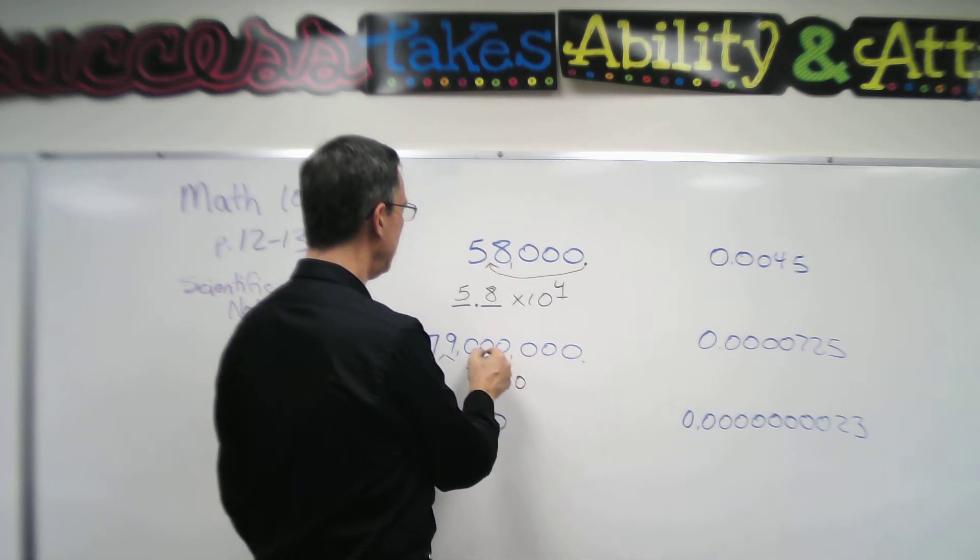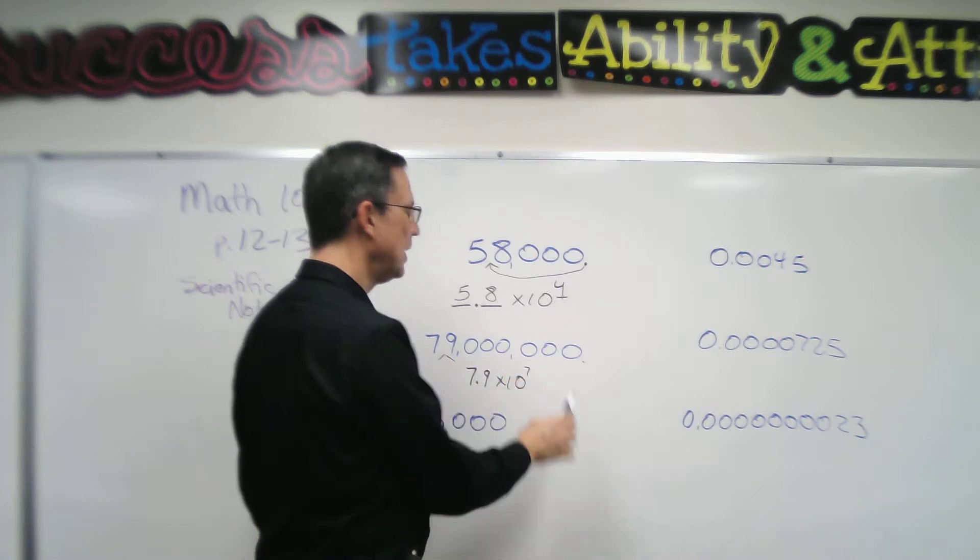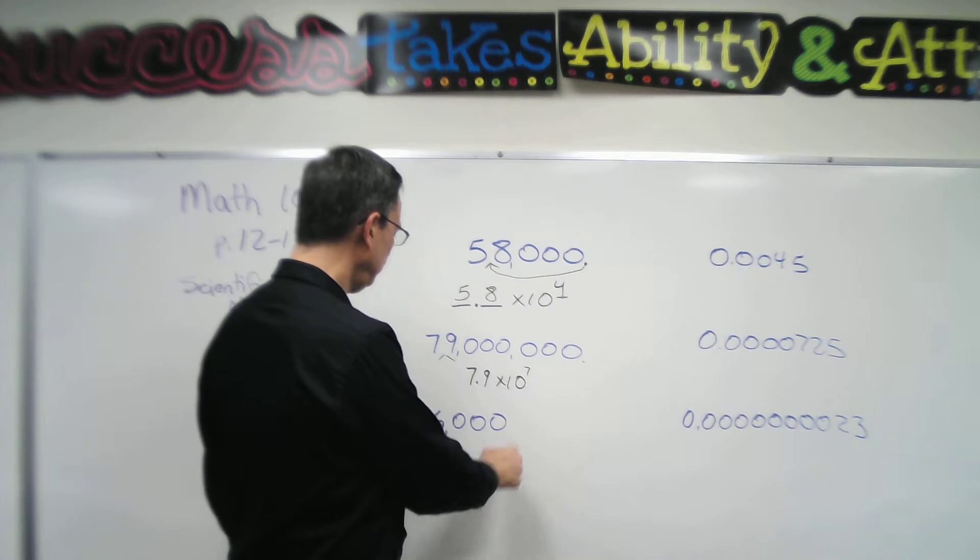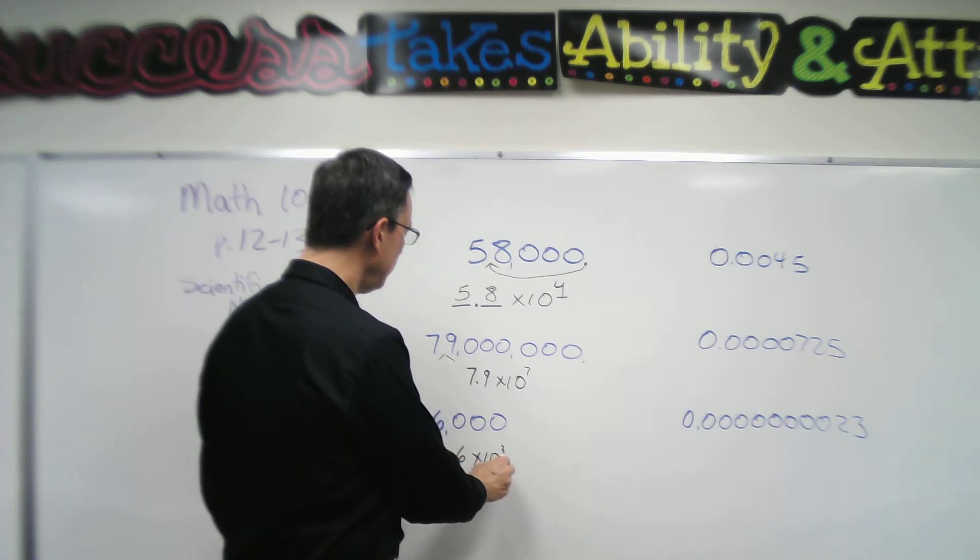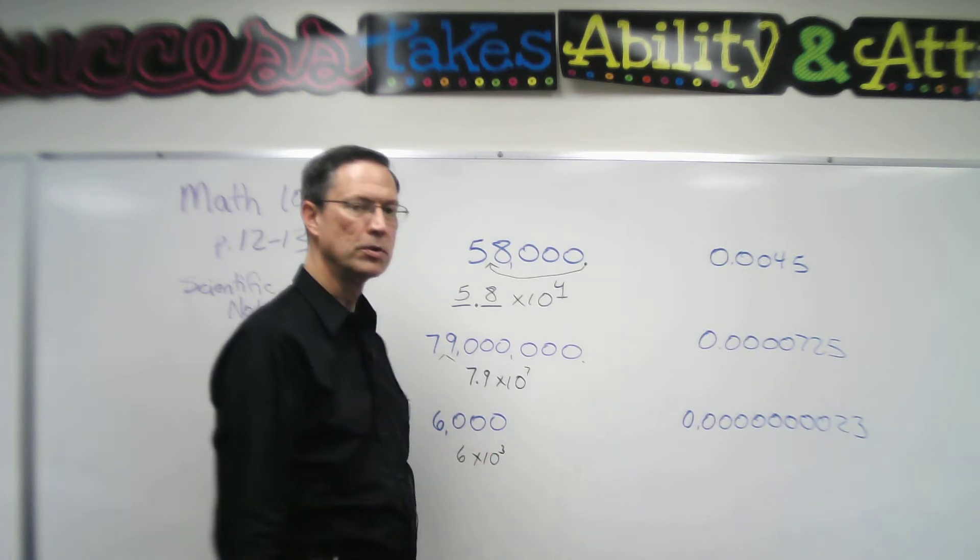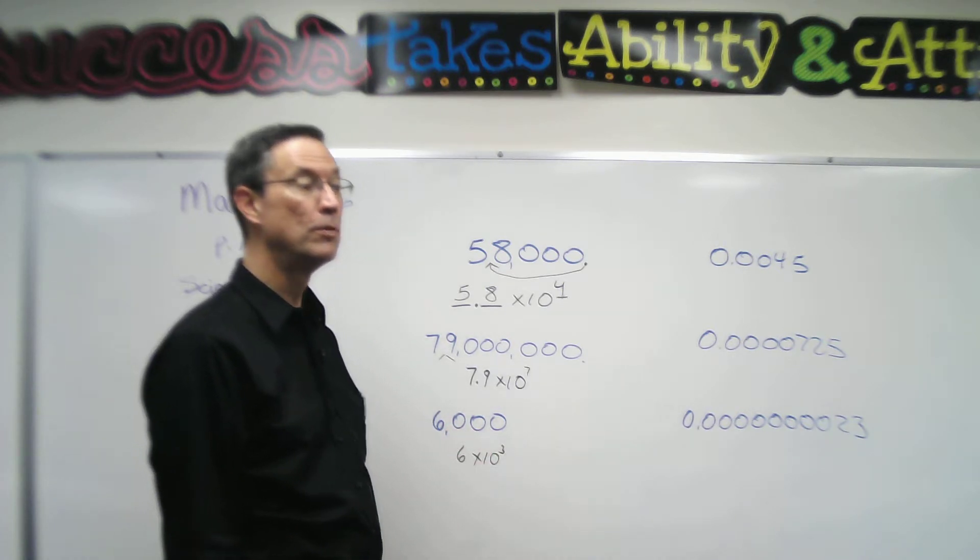How many times did I move the decimal? One, two, three, four, five, six, seven times to get to there. The number 6,000 just has to move three times to get between the six and this first zero. So six times 10 to the third power.